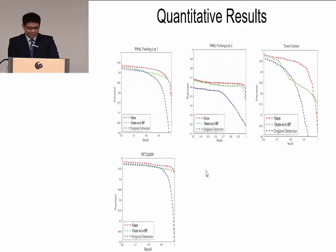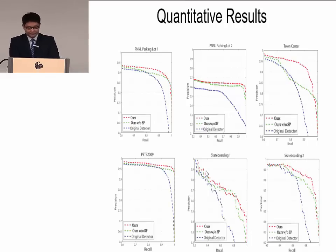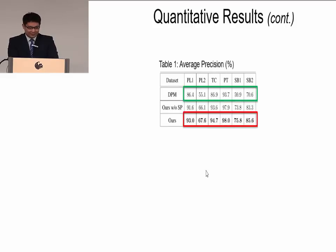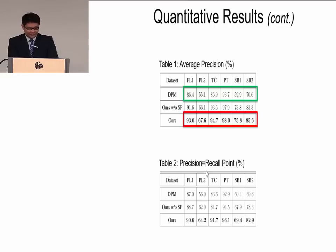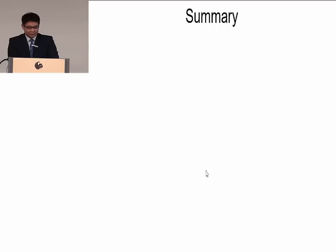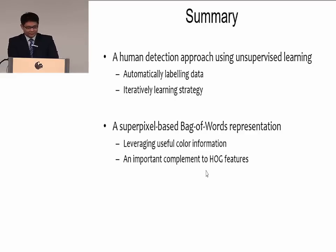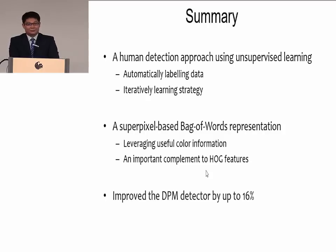We tested on all six video sequences and get the same conclusion. The table shows average precision on all six sequences — our method improved the DPM detector by up to 16% in average precision. Table 2 shows another metric, the precision-recall break-even point, and we have the same conclusion. To summarize this chapter, we proposed a human detection approach using unsupervised learning, a superpixel-based bag-of-words representation, and improved the DPM detector by up to 16%.